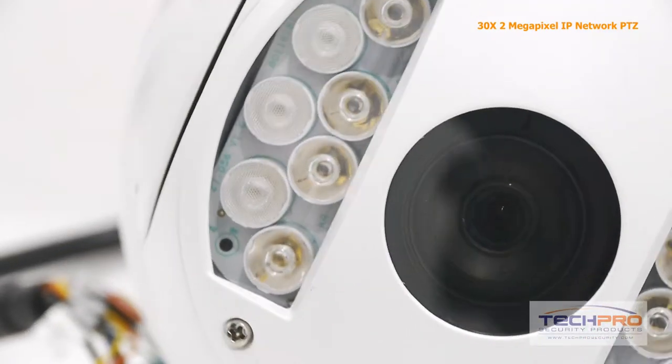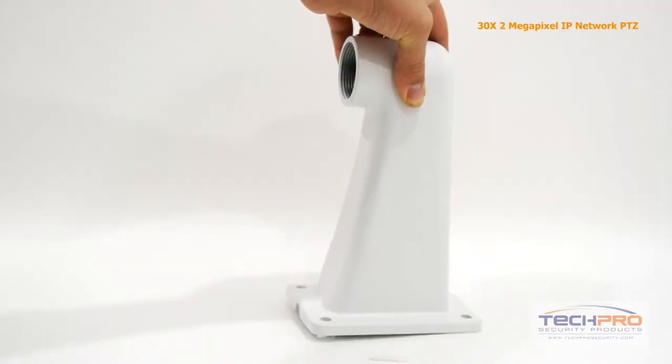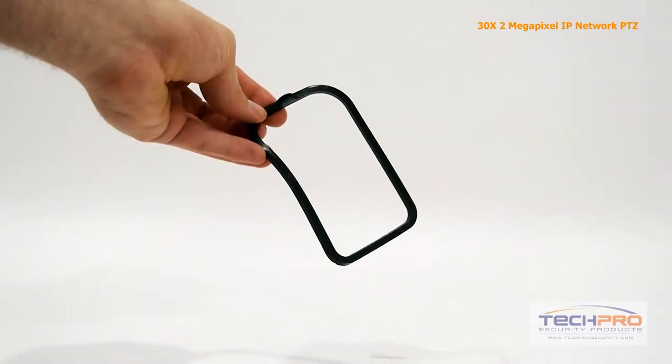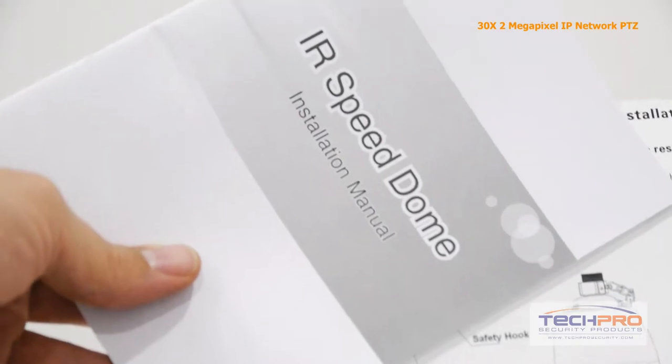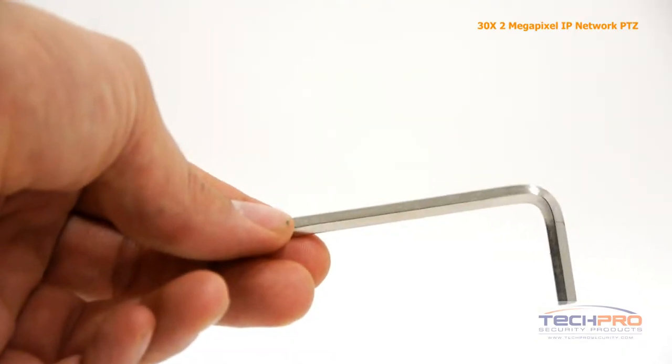Inside the box you'll also find a power supply, Teflon tape, this is the wall mount, a weather seal, a connection plate, gloves, instruction manuals, a safety hook, software disc, and an allen wrench.